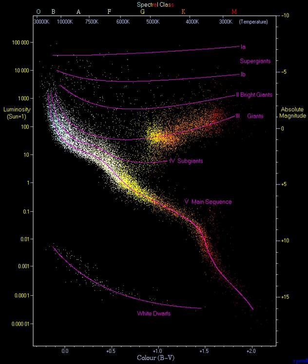In astronomy, the main sequence is a continuous and distinctive band of stars that appears on plots of stellar color versus brightness. These color-magnitude plots are known as Hertzsprung-Russell diagrams after their co-developers, Ejnar Hertzsprung and Henry Norris Russell.